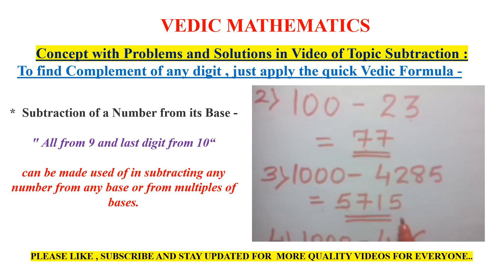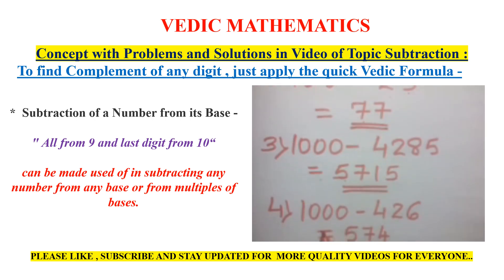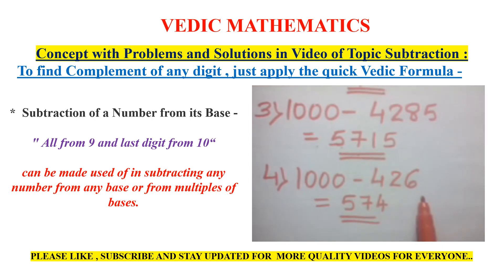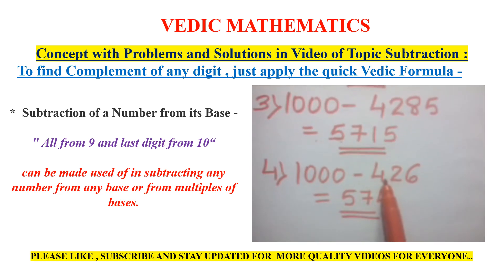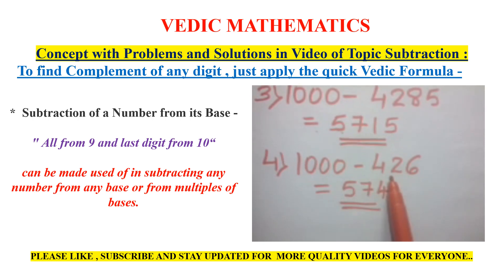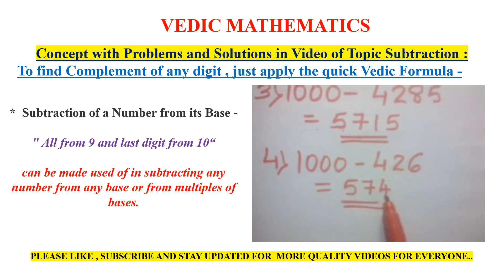Let's take the last and final example, 1,000 minus 426. 4's complement is 5, 2's complement is 7, and the last digit 6's complement is 4. The answer is 574 for the complement of 426.